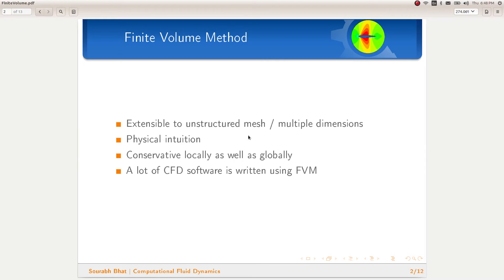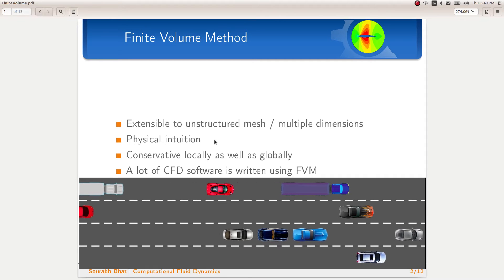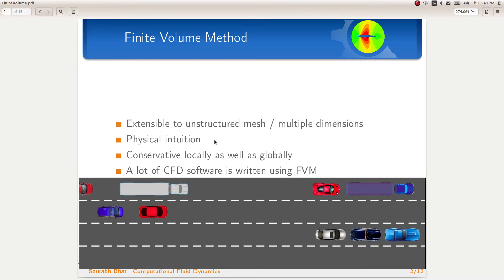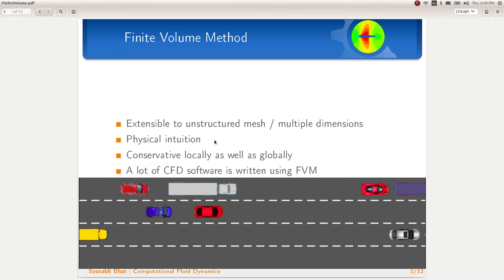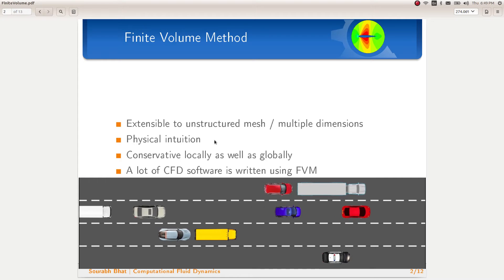A discretized formula after applying the finite volume method reads like the physical statement itself. A finite volume formula in plain English reads something like this: the amount of stuff entering a volume minus the amount of stuff leaving out from the volume must equal the rate at which the stuff is growing inside the volume. It is as simple as that and thus has a nice physical intuition to it. Like you can see in this animation, the amount of vehicles entering this piece of road have to leave the road or accumulate over this piece of road.